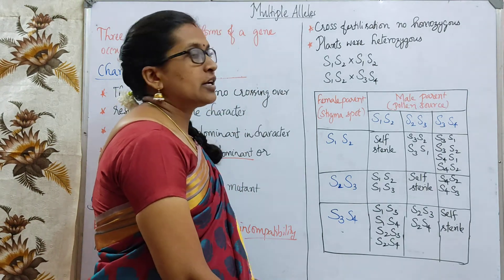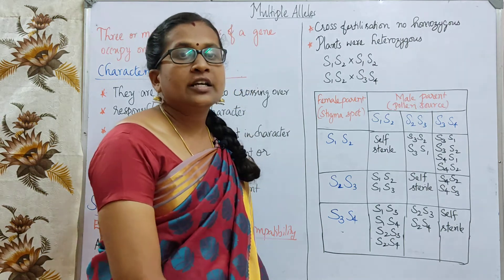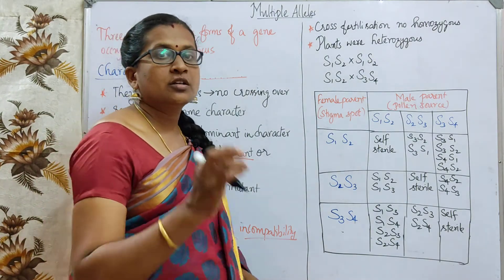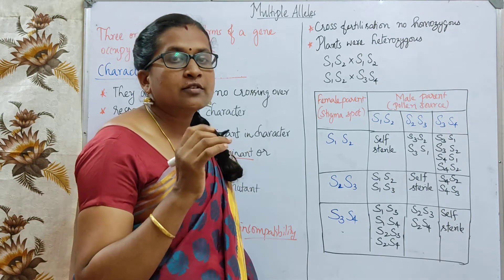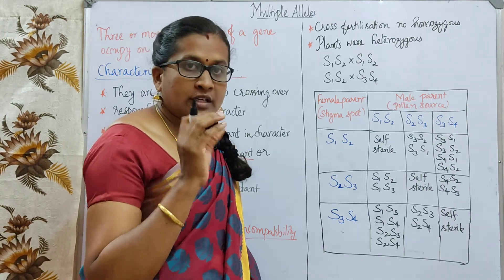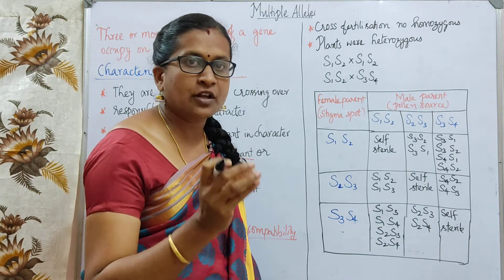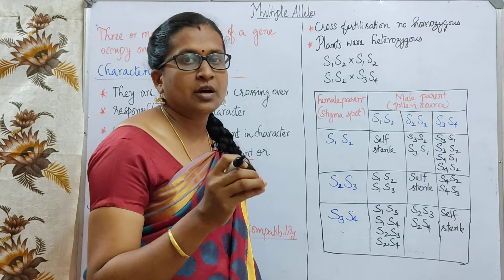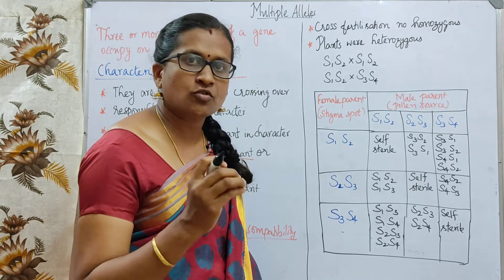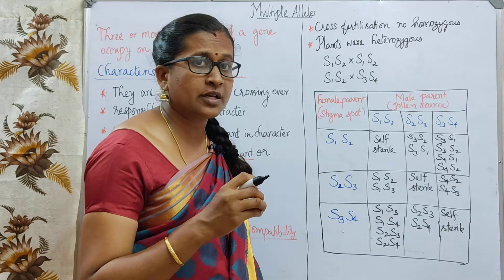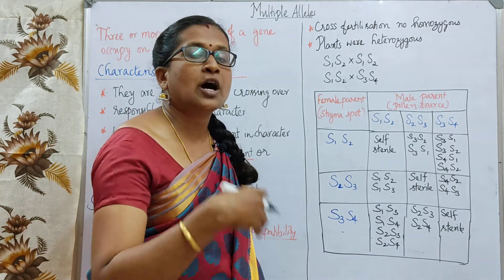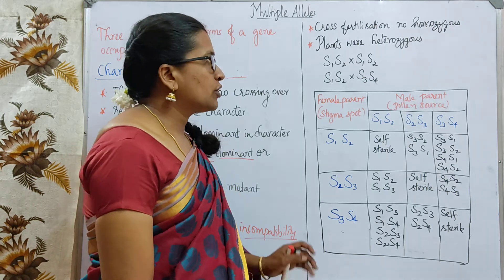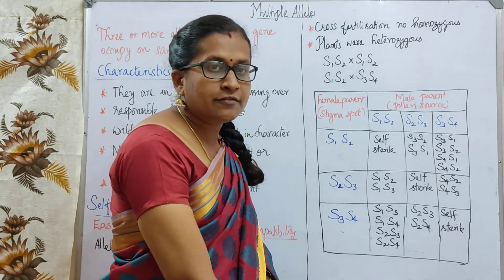In Nicotiana, during self-pollination, sterility occurs — called self-sterility. In self-pollination, in the same flower, male and female parts are present. The anther moves pollen to the stigma of the same flower and fertilization takes place. In cross-fertilization, anthers produce pollen grains which pass to the next plant.